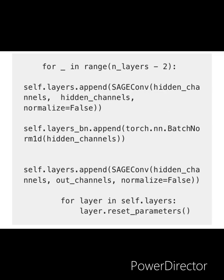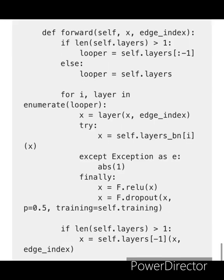Now it's time to run a for loop where our self.layers are banded with the SAGE convolutional network. You need to reset the parameters in both layers — this is how they work. Further, you have to define the forward as well as the looper function, and these two functions will help you achieve the training.